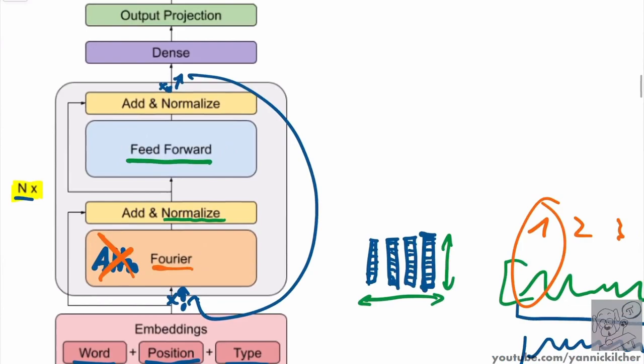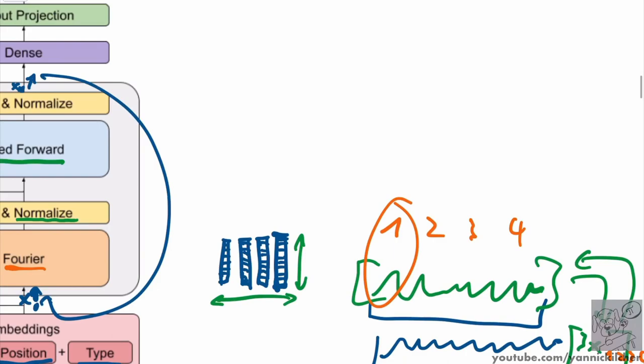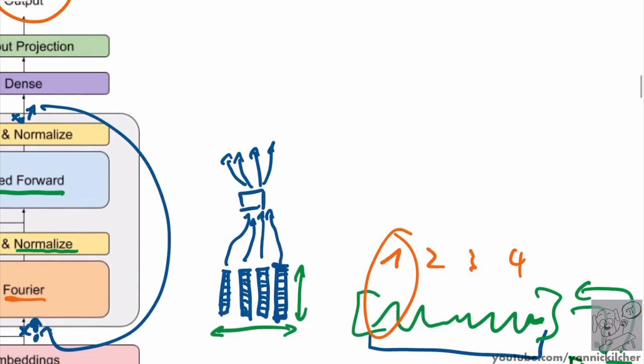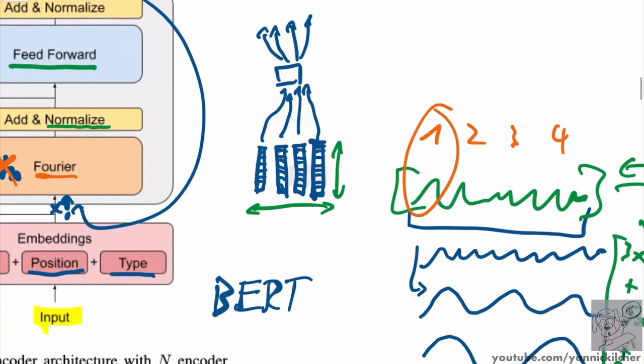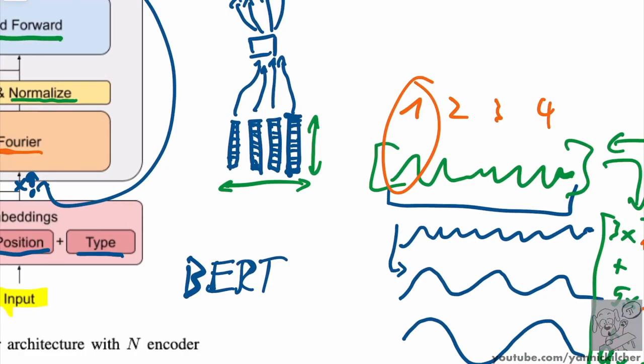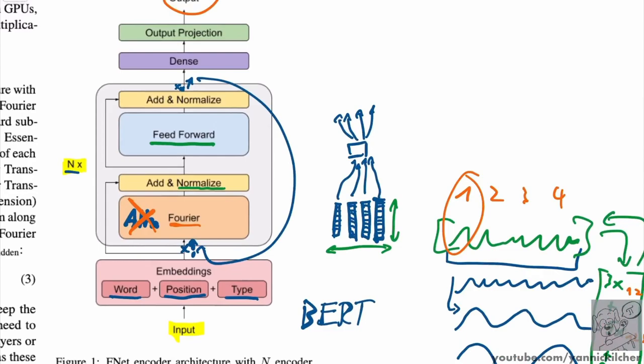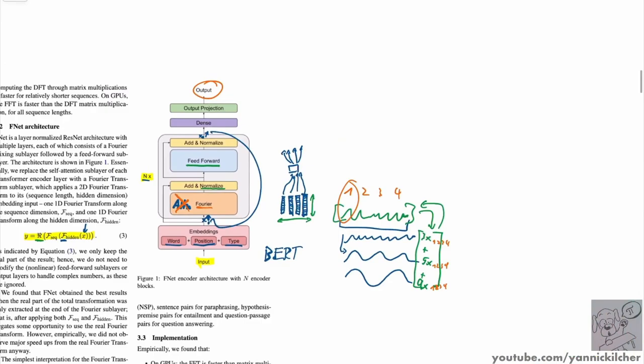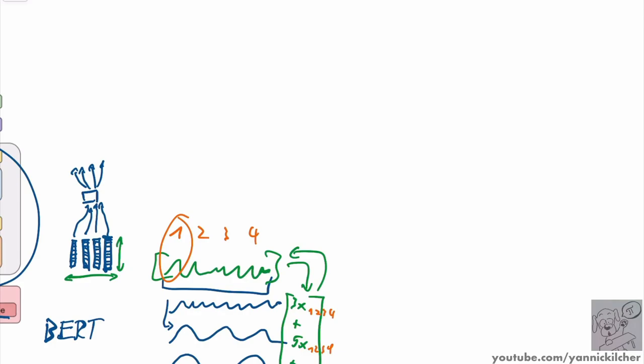The signal is the same. But the feed forward layers are applied differently. Remember the feed forward layer is applied individually - there's one feed forward layer, and it's individually applied to each of the elements of the sequence. So the same transformation. Now, what happens if you do the Fourier transform and then apply the feed forward to each element? Well, now each element is no longer corresponding to a token, but each element is corresponding to one frequency across all the tokens in the entire sequence. So now alternatingly, the feed forward layers can work on the individual tokens, or on the individual frequencies across all tokens.